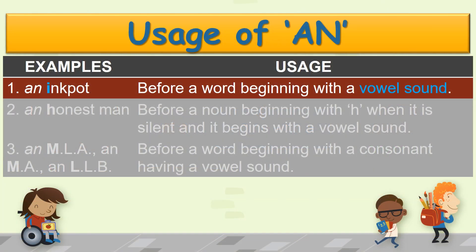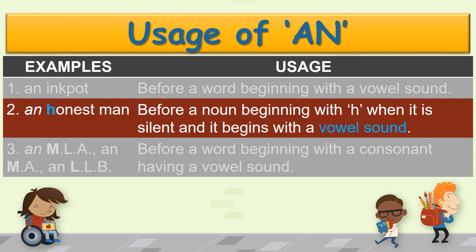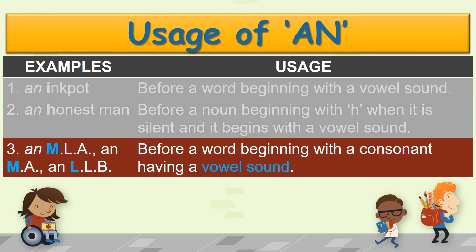Let's try to understand it with more examples. 'An' is placed before inkpot as it begins with a vowel sound E. 'An' is placed before honest — but why? H is not a vowel. It is because 'honest' begins with the vowel sound OR, and H is silent here. 'An' is placed before MLA and LLB, because M and L both begin with the vowel sound A. Therefore, we use 'an' before them.